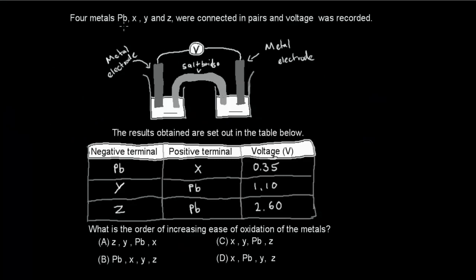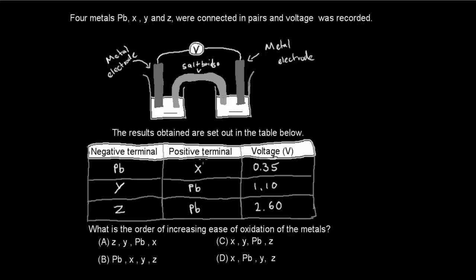The next question: four metals — Pb, X, Y, and Z — were connected in pairs and the voltage was recorded. Pb is the negative terminal and X is the positive terminal at 0.35 volts. Y is the negative terminal and Pb is the positive terminal at 1.1 volts. Z is the negative terminal and Pb is the positive terminal at 2.6 volts. What is the order of increasing ease of oxidation of the metals?